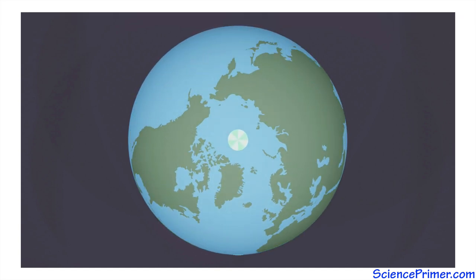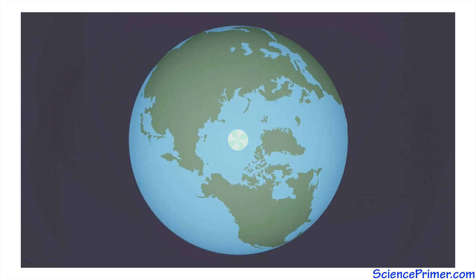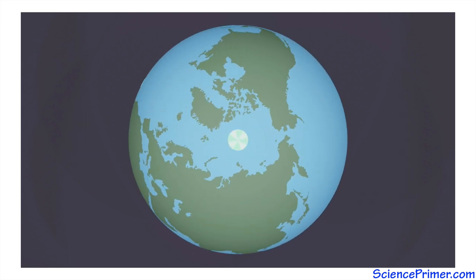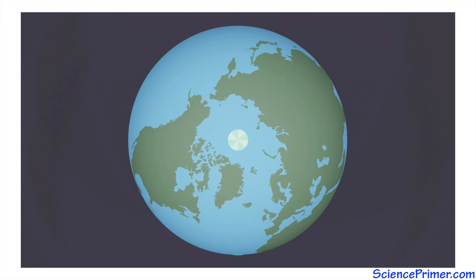Contrast this with a similar parcel sitting right on the north pole. As the Earth rotates, this parcel also spins, completing one full rotation in 24 hours. So from a non-rotating frame of reference, water at the equator does not spin, while water at the pole does.